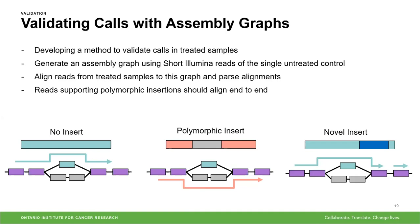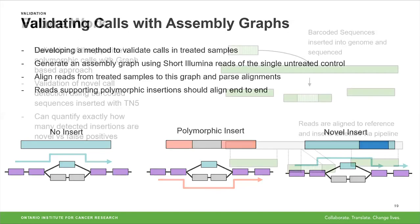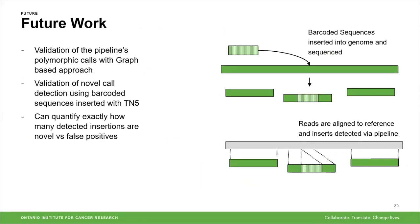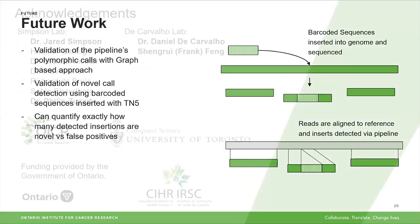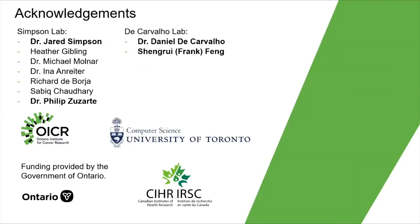For future work, we're currently validating the pipeline's polymorphic calls with this graph-based approach, and also validating the novel calls and detection method using barcoded sequences inserted with Tn5 — this allows us to quantify exactly how many detected insertions are novel versus false positives. I'd like to thank my advisor Dr. Jared Simpson and the rest of the Simpson lab, as well as Dr. Daniel D. Carvalho and Frank for all of their help and support in this project. We'll now take questions.